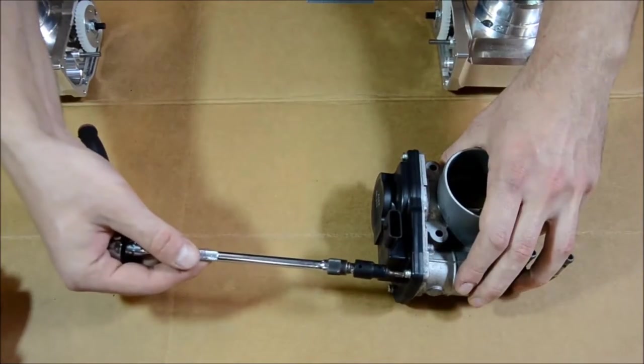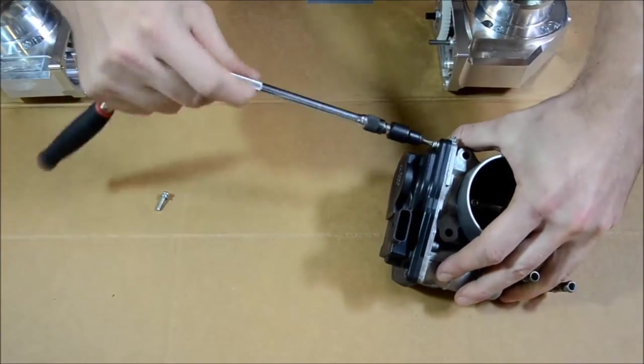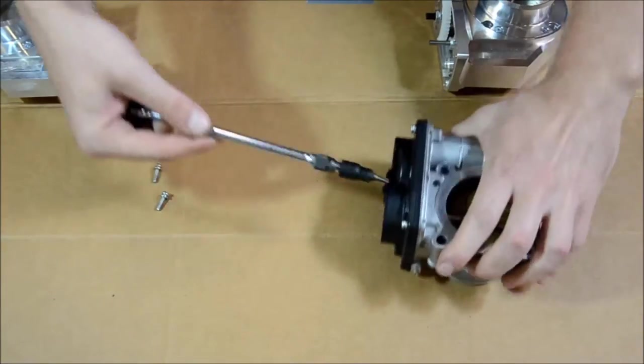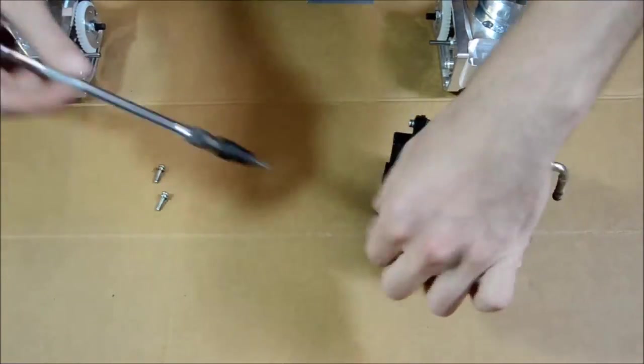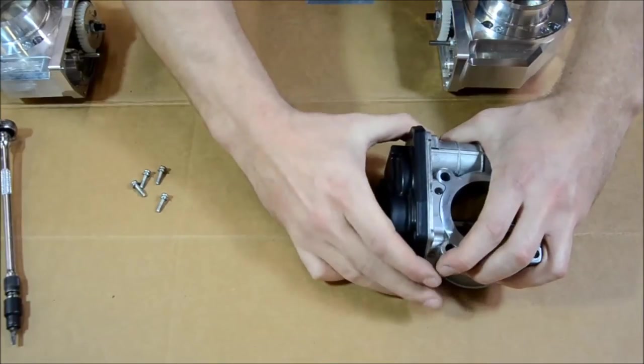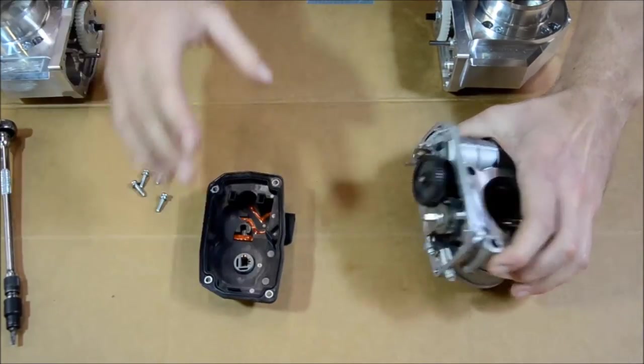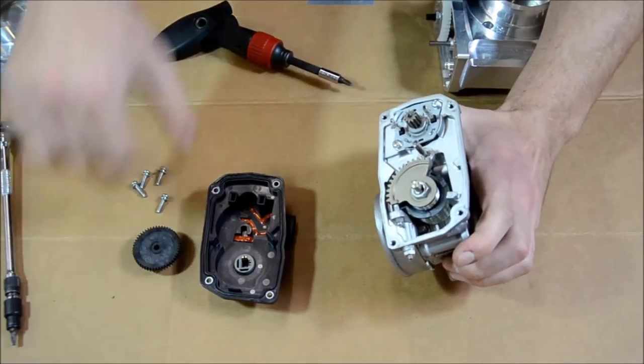Use the T20 to unscrew the four corner screws securing the servo cover. Pry gently on the cover to release it from the housing. Remove the small gear and set it aside.